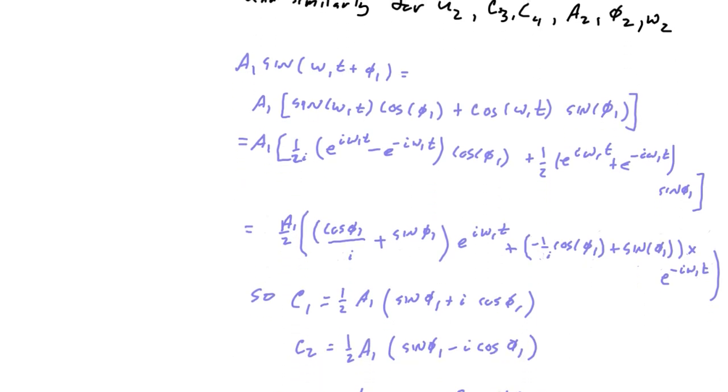So we'll start out with A1 times the sine function. I'll use the addition formula and split it up like this. And then I will substitute for sine omega 1t and cosine omega 1t in terms of the complex exponentials. So it looks like this.